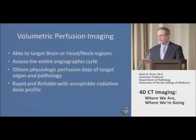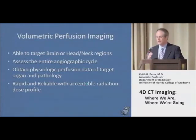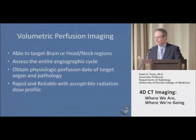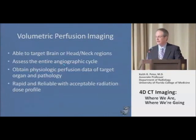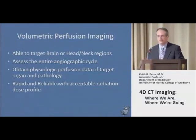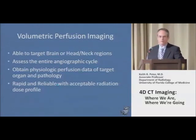Looking at volumetric perfusion imaging overall, it's gone beyond just looking at the head — it's not just a brain scanner. It's able to look at head and neck regions, and there are protocols being set up for imaging the liver and other organs. We're able to assess the entire angiographic cycle — arterial, capillary, and venous — giving us better physiology information about the pathology. It's very rapid and reliable with, at least at this point, very acceptable radiation dose profiles. These are really becoming workhorse scanners.